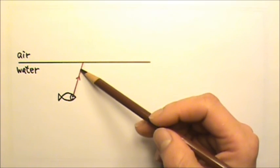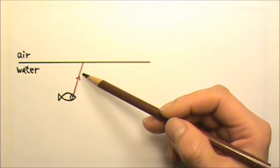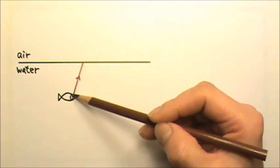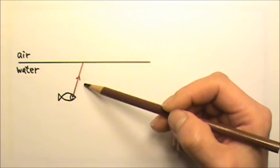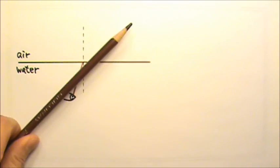When this ray goes from water into air, its speed increases. Therefore the angle should increase. Because the angles are measured between the ray and the normal line, it would help if we draw the normal line. The angle increases. That means this light ray would bend this way.